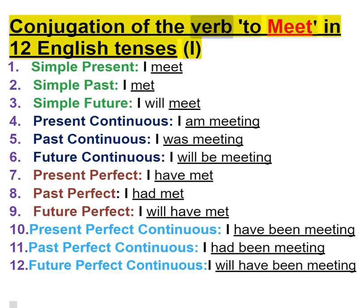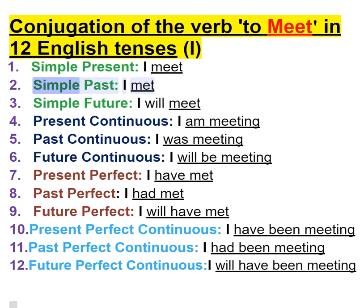Conjugation of the verb to meet in 12 English tenses. I: 1. Simple present — I meet. 2. Simple past — I met. 3. Simple future — I will meet.